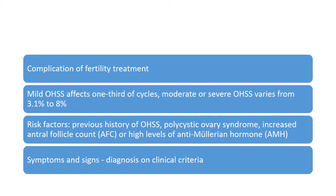OHSS is a complication of fertility treatment. Mild OHSS affects one third of cycles. Moderate or severe varies from 3.1 to 8%. Risk factors are previous history of OHSS, polycystic ovary syndrome, increased antral follicle count, or high levels of anti-Müllerian hormone.